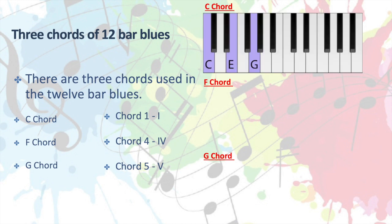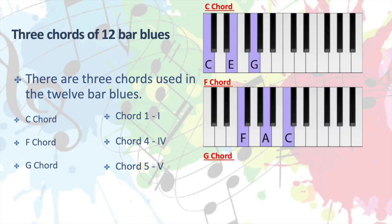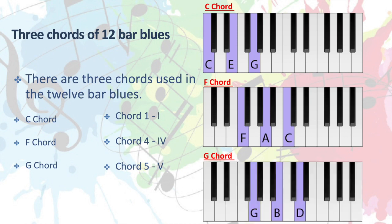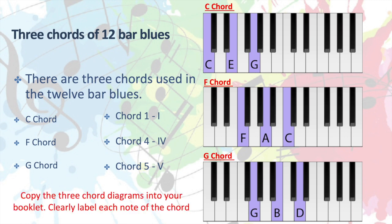So our C chord is C, E and G. The F chord is F, A and C. And the G chord is G, B and D. Copy these three chord diagrams into your booklet or onto your paper, and clearly label each note of the chord. Pause the video here just to do that.